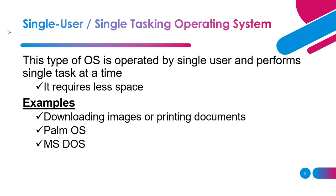Single user single tasking operating system — as quite evident from its name, this type of operating system is operated by a single user who can perform only a single task at a time. It requires less space. Examples include downloading images or printing documents, Palm operating system, and MS-DOS. MS-DOS is a classical example of a single user single tasking operating system.